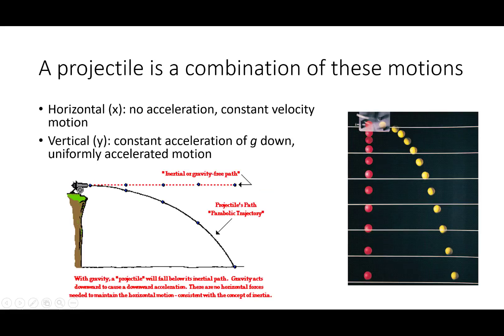A projectile is a combination of these two motions. In the x direction there is no acceleration because there are no x forces. The free body diagram is actually going to be the same as an object just dropped — it's just a downward force equal to mg. So in the horizontal direction, we travel equal amounts of horizontal distance in equal amounts of time. In the vertical direction, our velocity increases by a constant amount each equal amount of time. So when we combine those two we get a parabolic arc — constant motion in the x direction, constant acceleration in the y direction.